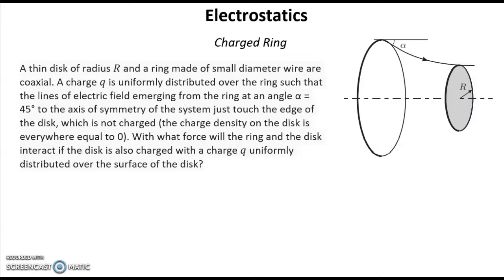So we have a thin disk of radius R and a ring made of small diameter wire R coaxial. The charge Q is uniformly distributed over the ring such that